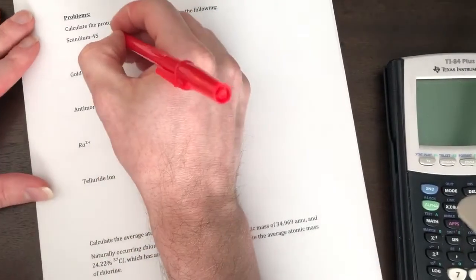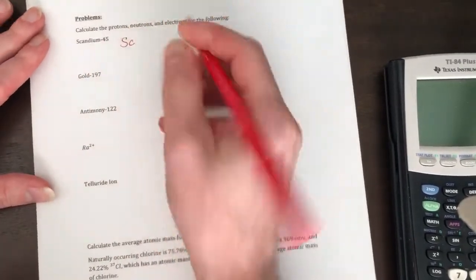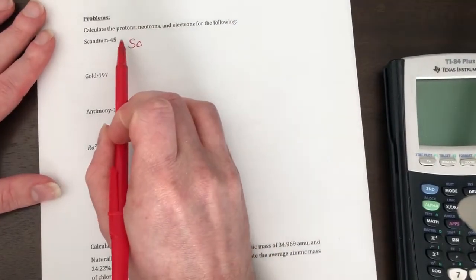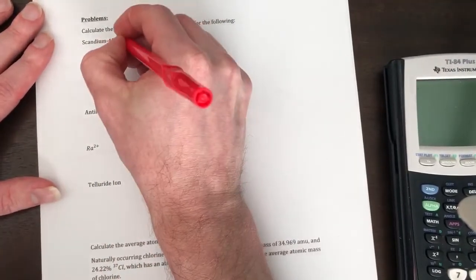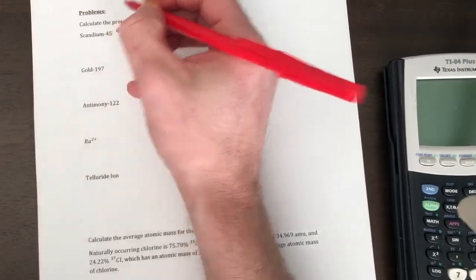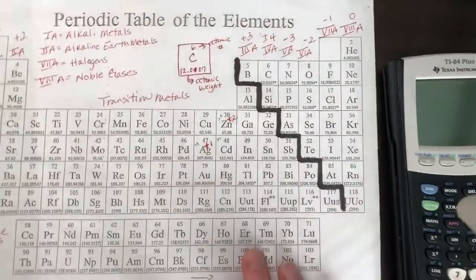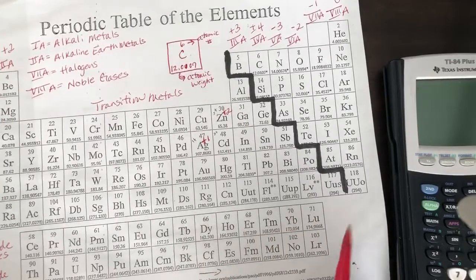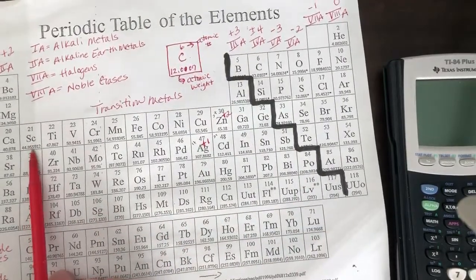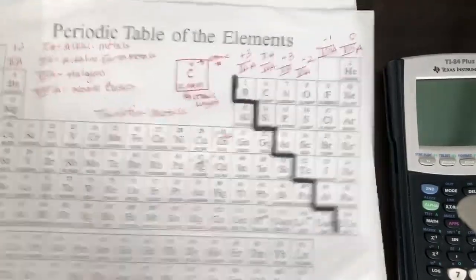Okay, so scandium, symbol for scandium is SC. When it's written like this, this gives you the atomic mass. So the atomic mass is 45. We're gonna go to our periodic table and scandium, where you at scandium? It's right here, has atomic number 21.